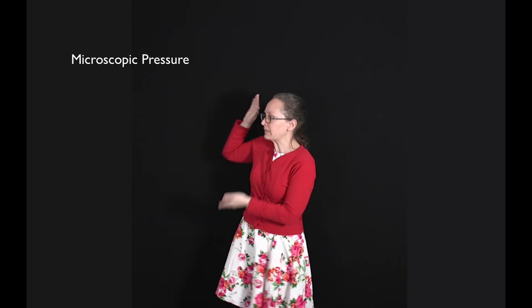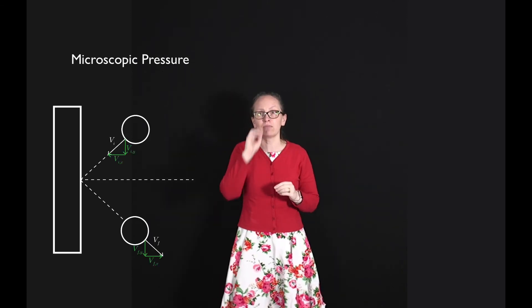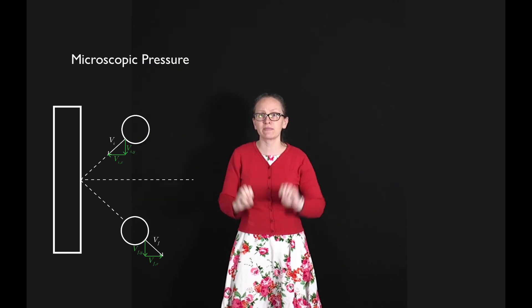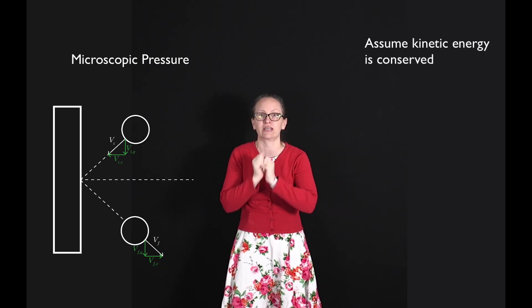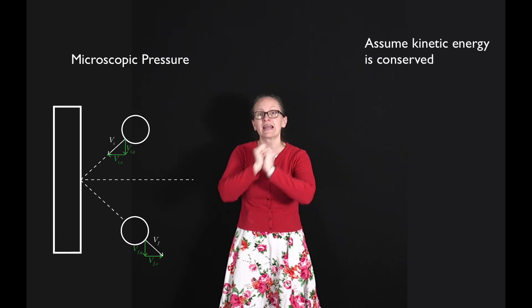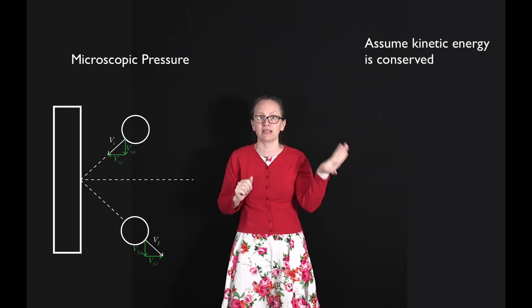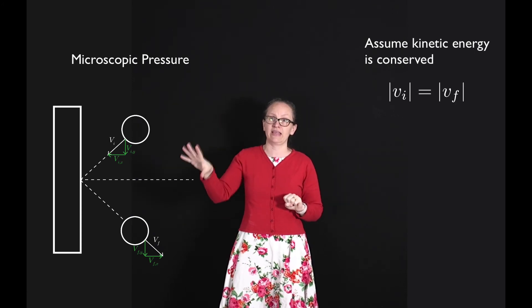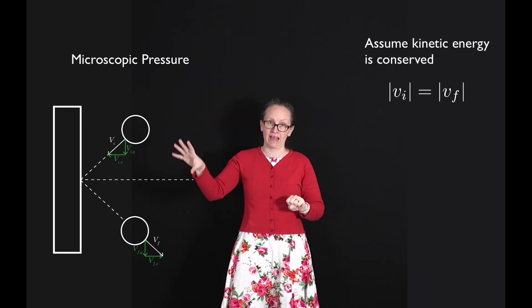So picture this, we've got a molecule which is colliding with a wall. Now we're going to make the assumption that kinetic energy is conserved. If kinetic energy is conserved, it means that the speed before the collision vi must be the same as the speed after the collision vf.